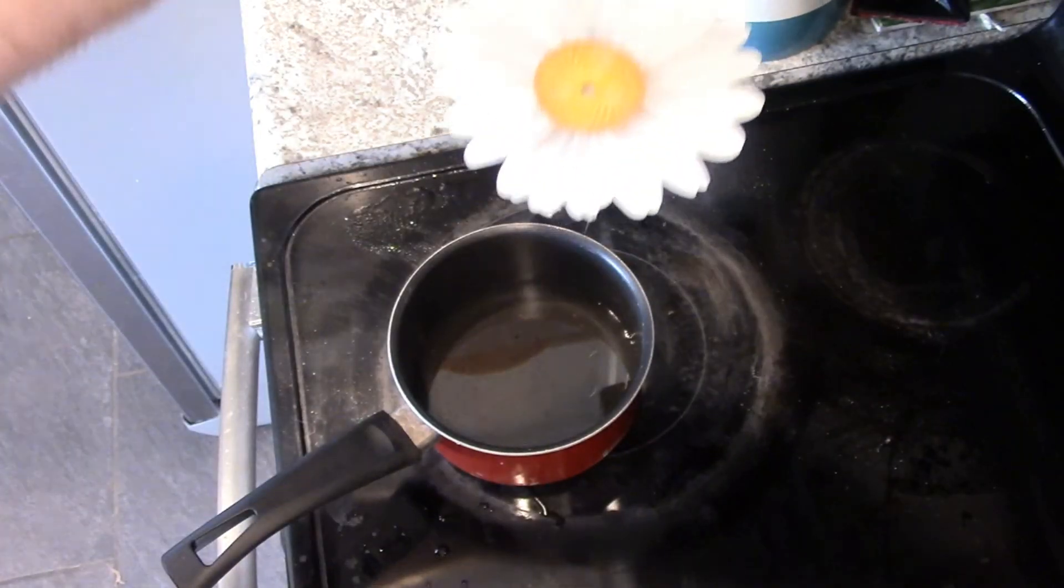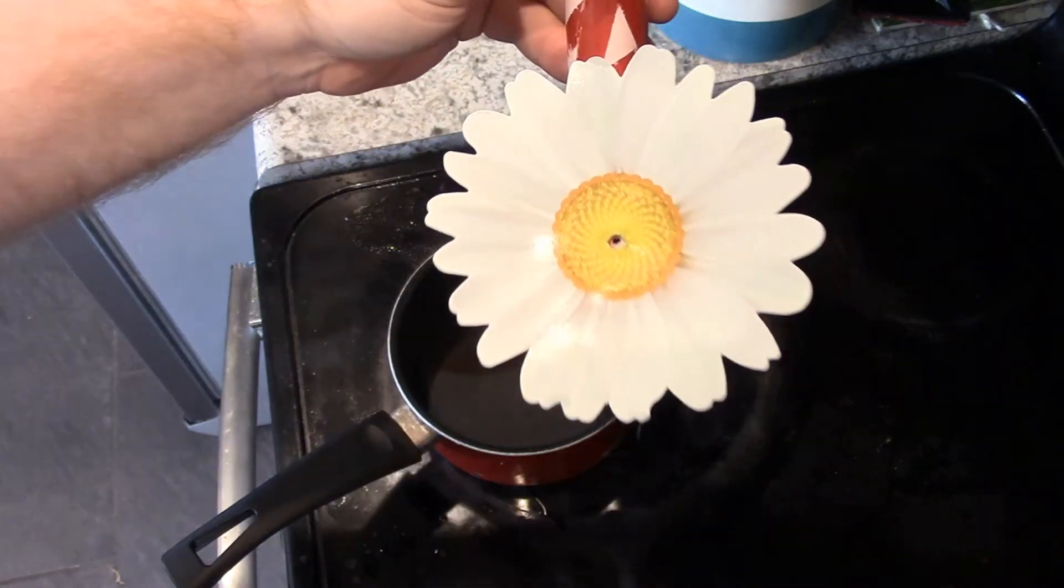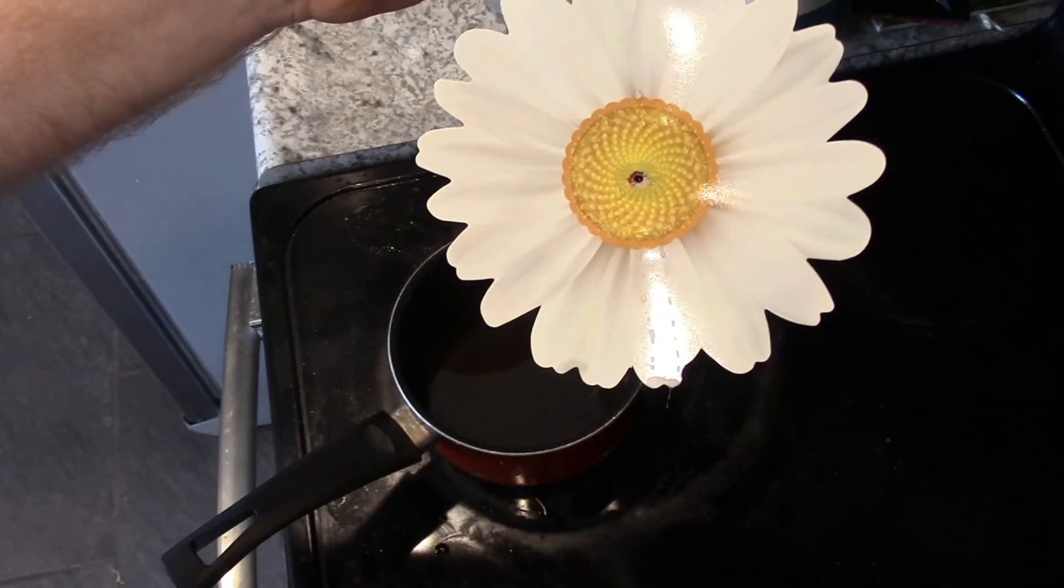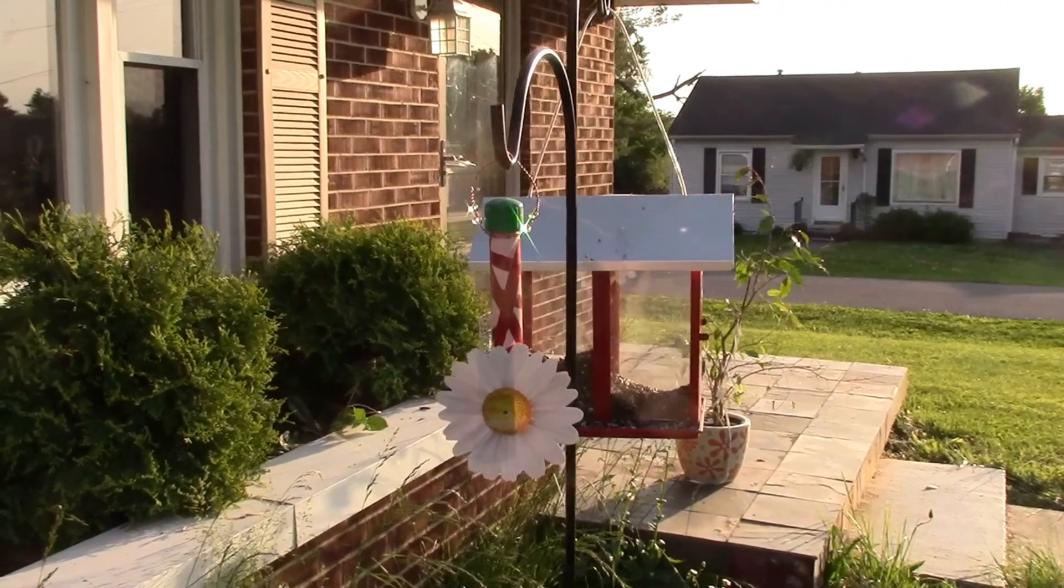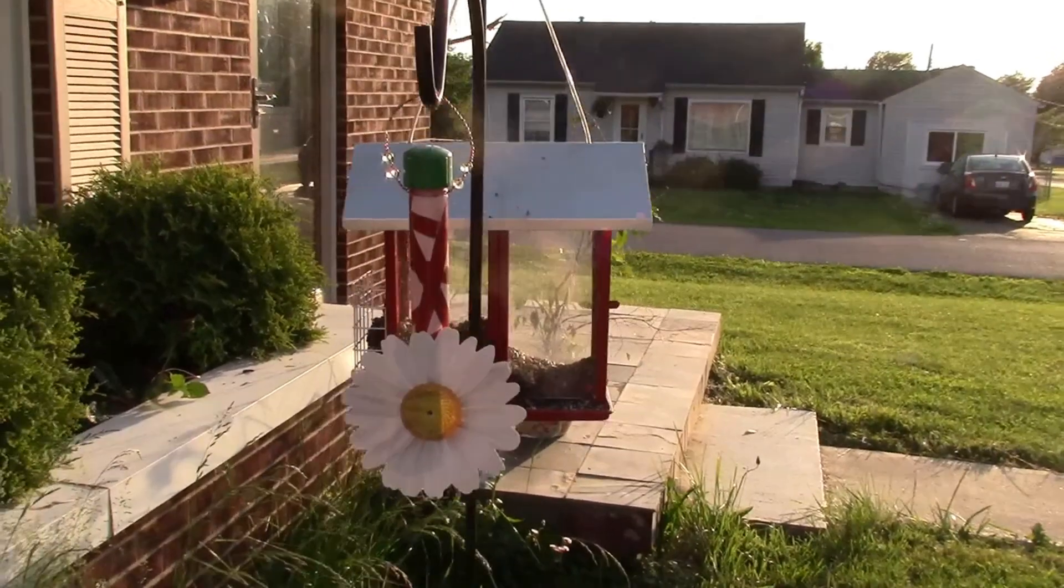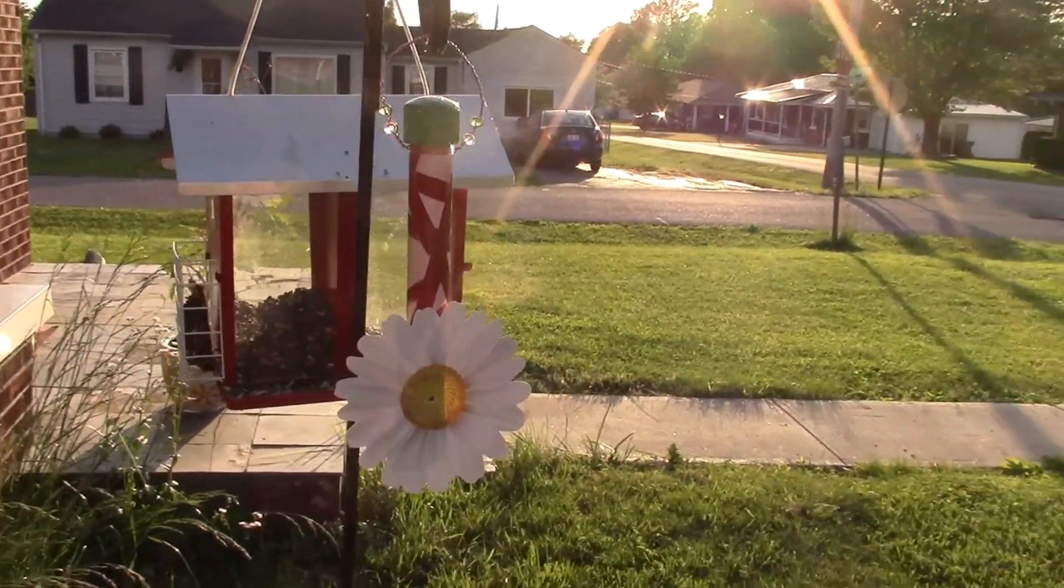The water tension combined with the vacuum seal should hold the water inside with a few drips. Over time, the syrup will slowly drain out or be consumed by visiting birds. When it does, just whip up a bit more syrup and rehang it. Enjoy the view!